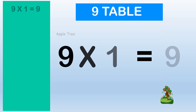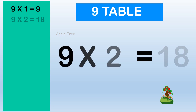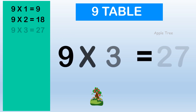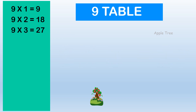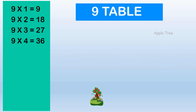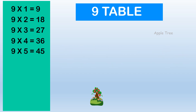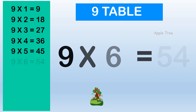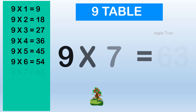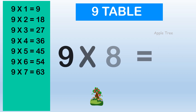Table for 9. 9 × 1 = 9, 9 × 2 = 18, 9 × 3 = 27, 9 × 4 = 36, 9 × 5 = 45, 9 × 6 = 54, 9 × 7 = 63.